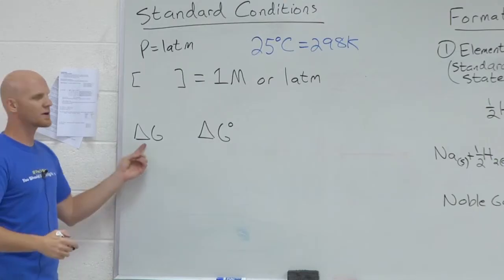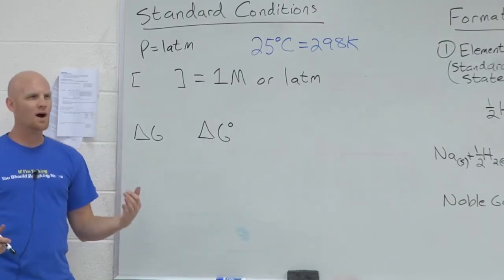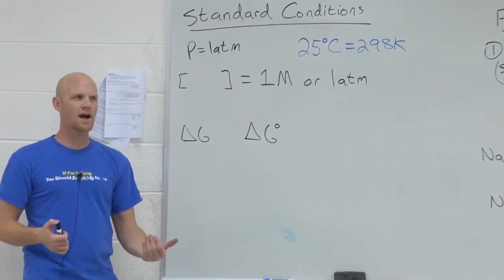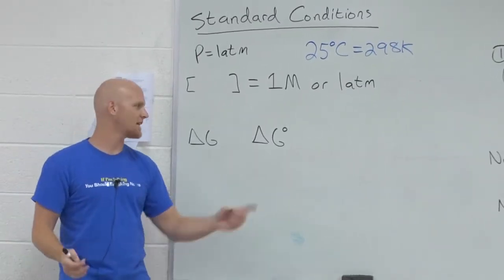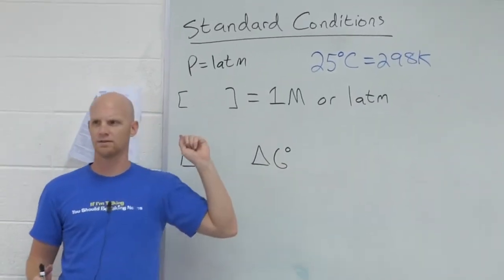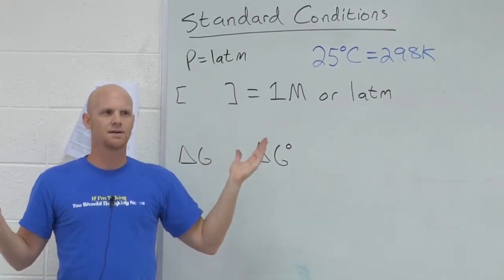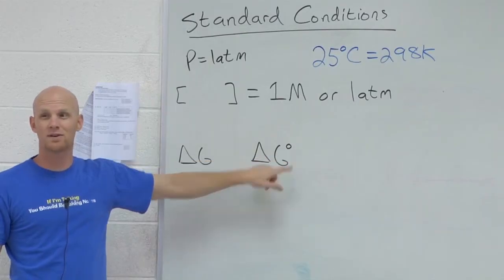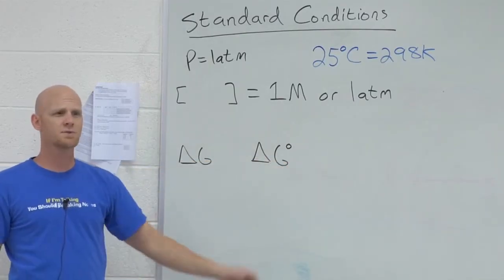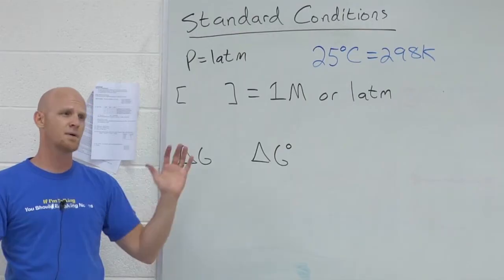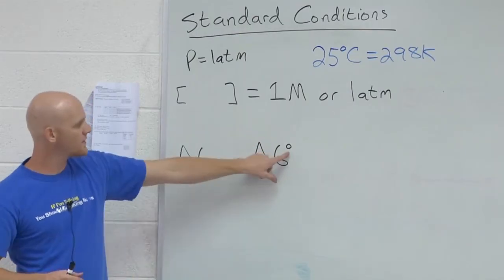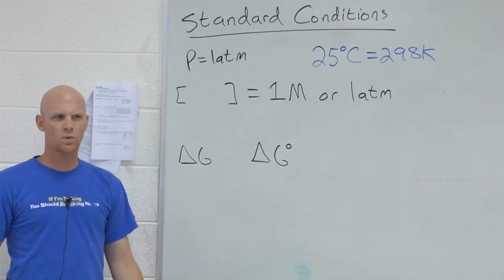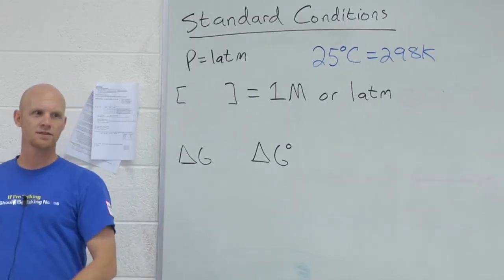So what if we're not doing a reaction under standard conditions? How often do you think you might do a chemistry reaction in a chem lab and start out with both reactants and products at exactly that concentration of one? Almost never. But unfortunately, this is the only set of conditions for which you typically find a bunch of published values. You can look up thousands and thousands of reactions, and they'll give you values only for the standard condition. So what if you want to find out what's delta G under some other non-standard set of conditions?